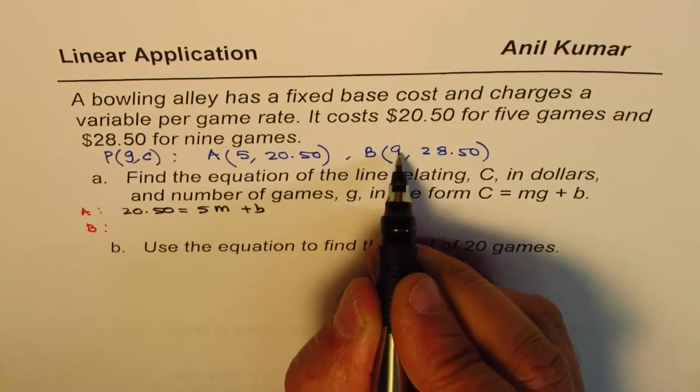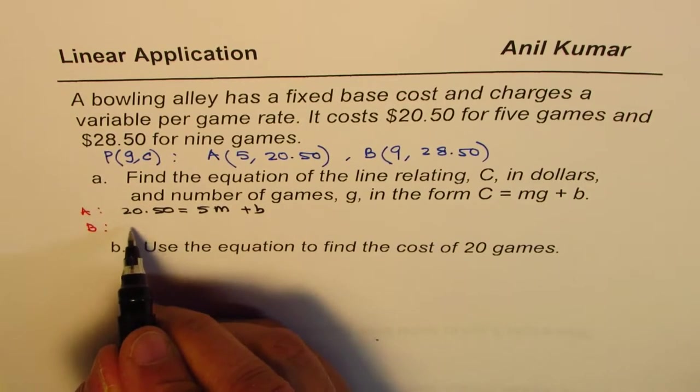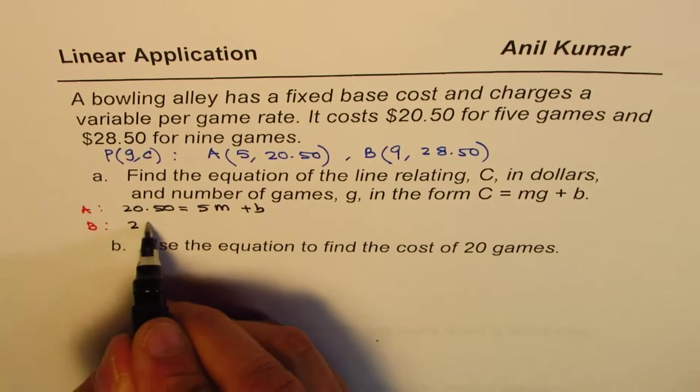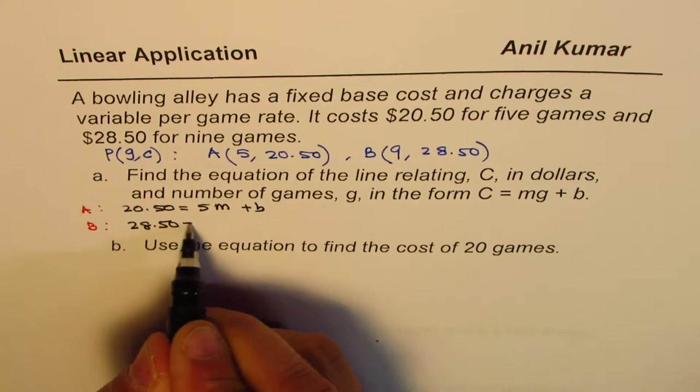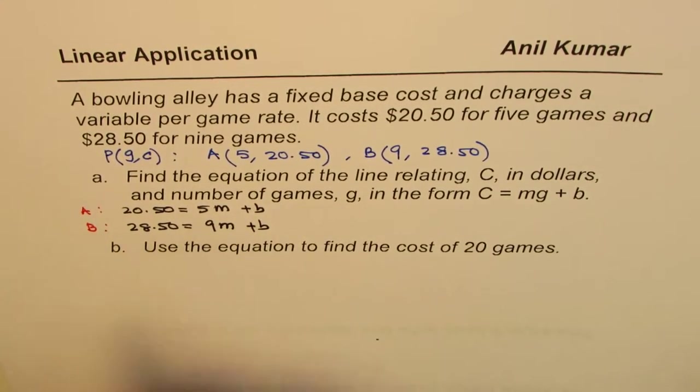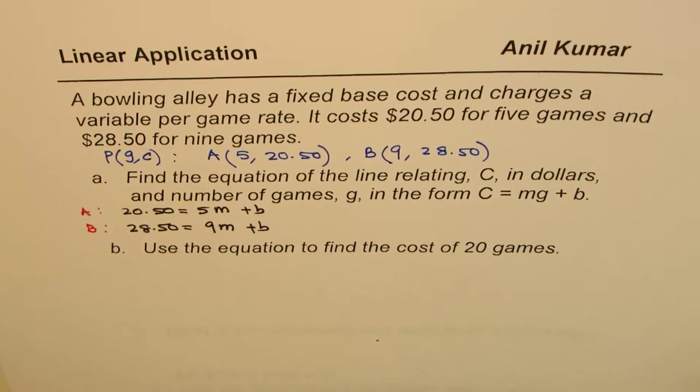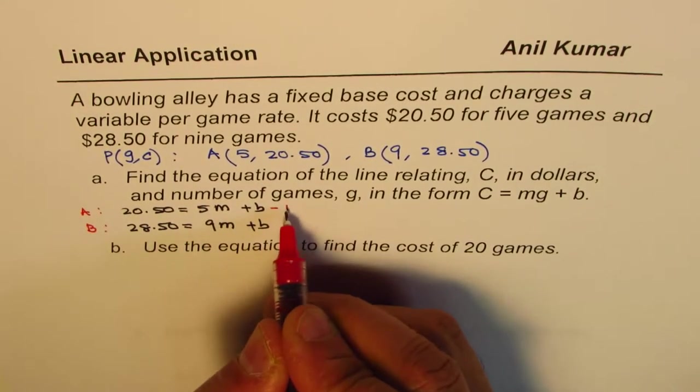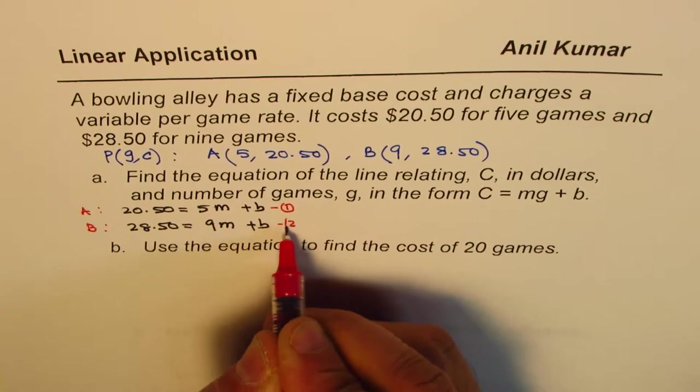And for B, it is, number of games is 9, but the cost is 28.50. So, we'll write 28.50 first, and then 9, M is the slope, and B. So, that is how we get two equations. So, let's number them. Equation 1 and equation 2.